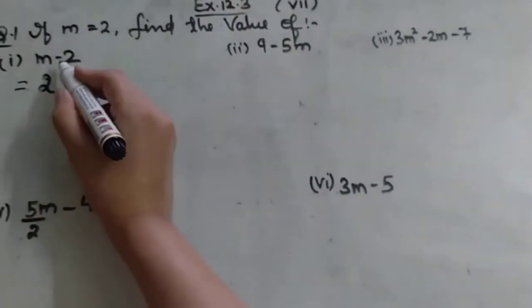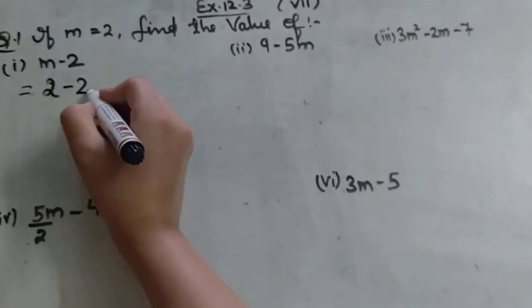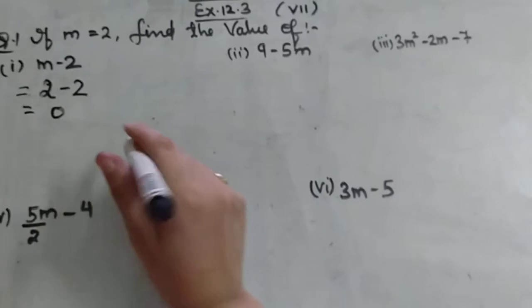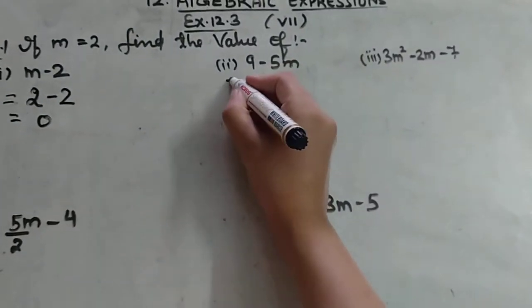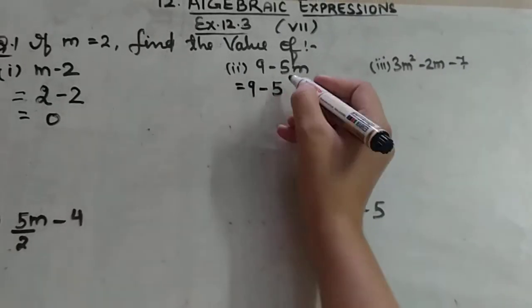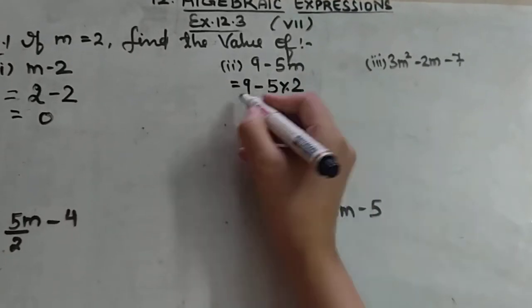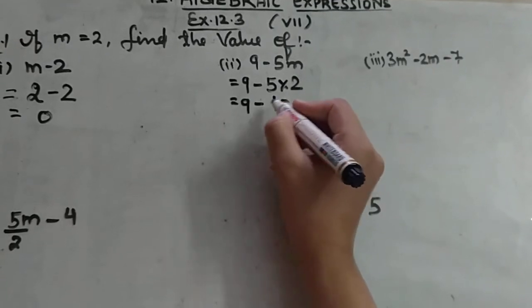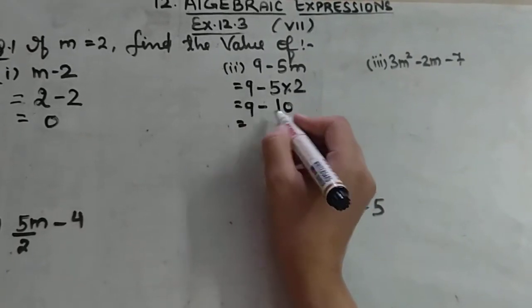We have m minus 2, and 2 minus 2 is 0. This is your answer. Again, second part: 9 minus 5 multiply m. M value is 2 here. So it is 9 minus 5 into 2, which is 10. 9 minus 10 equals minus 1.